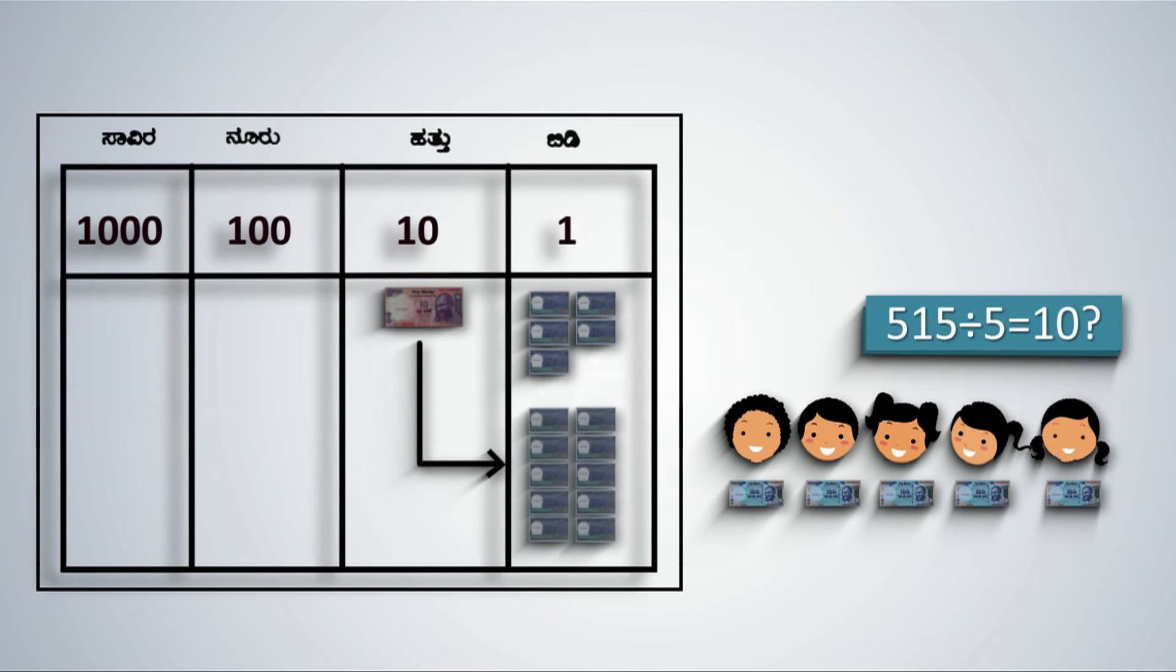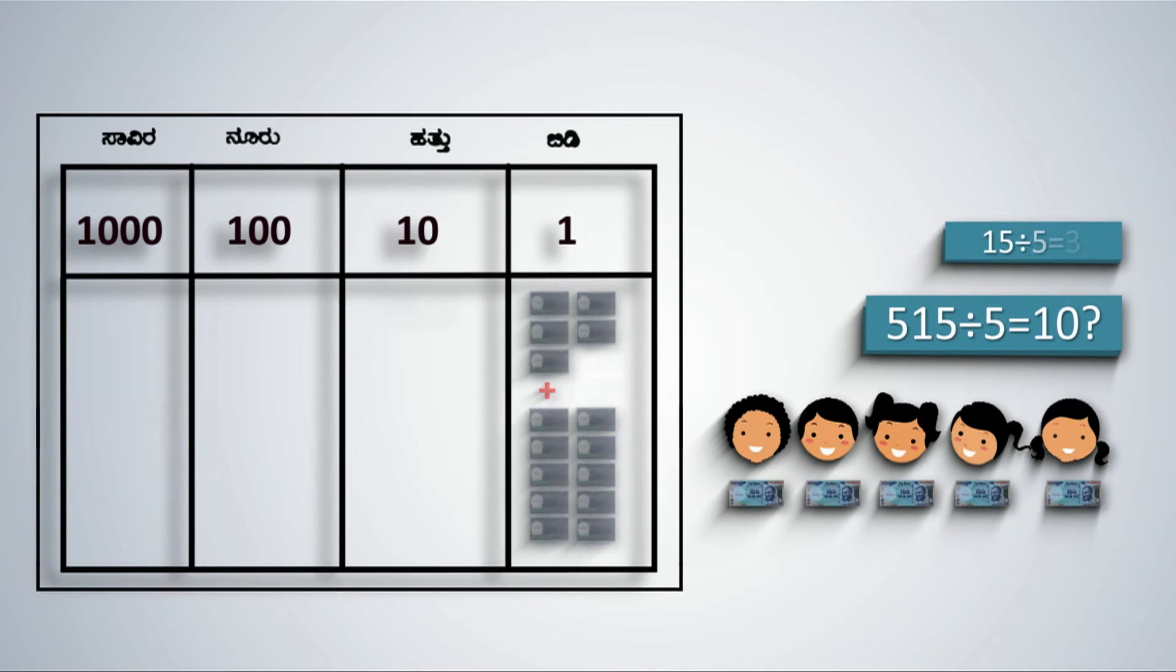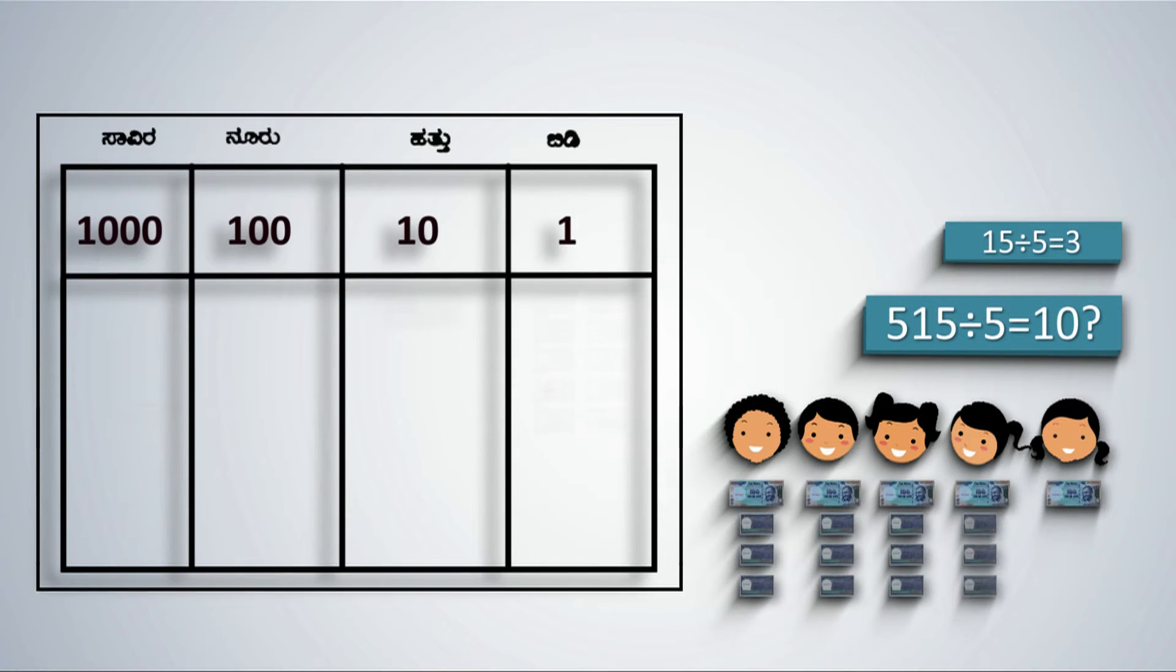But, one 10 can be exchanged for 10 ones. Along with the 5 ones in the units place, we now have a total of 15 ones to be divided by 5. Thus, each student's share is 3 ones.